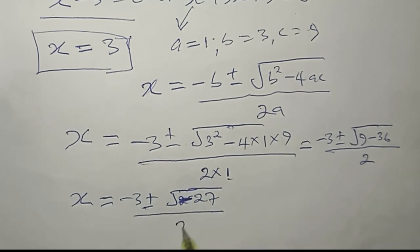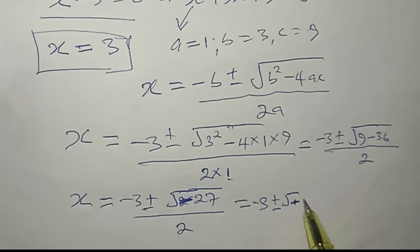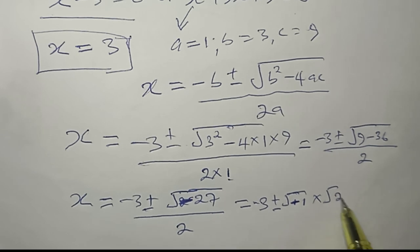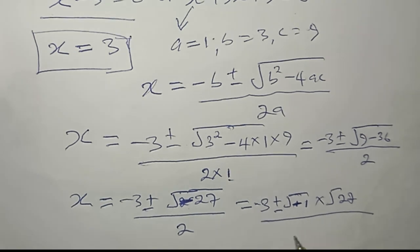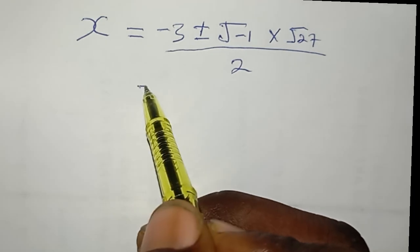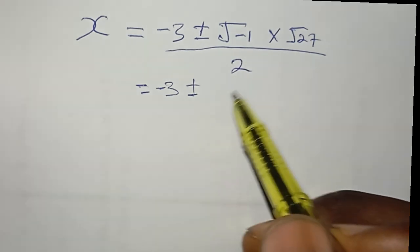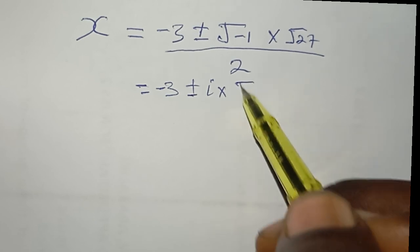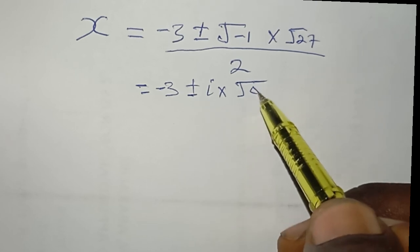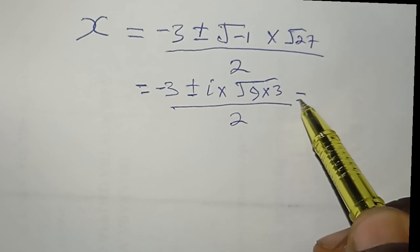We can split √(−27) as √(−1) times √27. Since √(−1) = i, and we can split √27 as √(9 × 3), we get x = (−3 ± i√27) / 2.